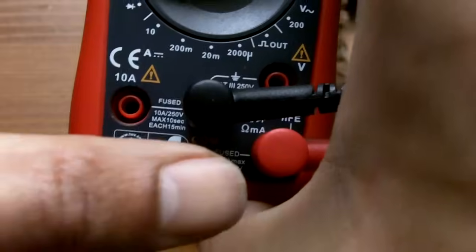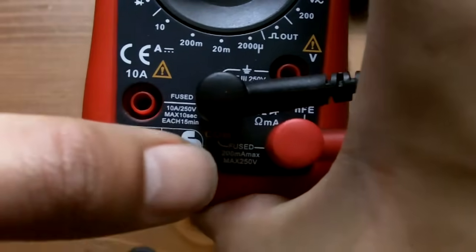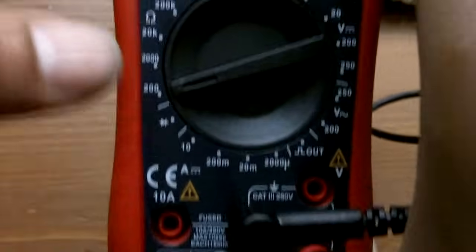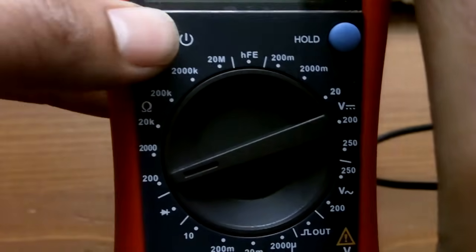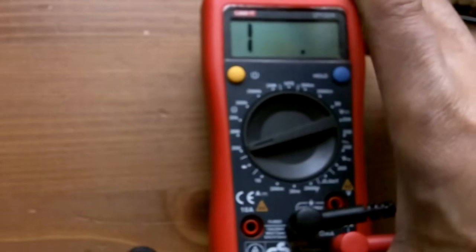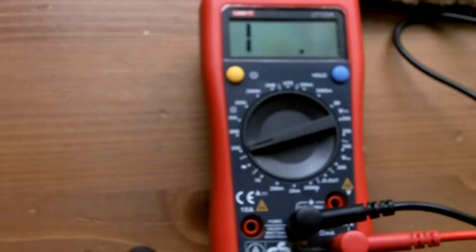So you have the plugs plugged in in the correct slots. Black in the comm socket, red in the resistance socket there. You have the multimeter set on its lowest setting. Because what you're looking for is a reading of really as close to zero ohms as possible.